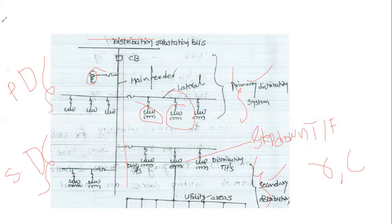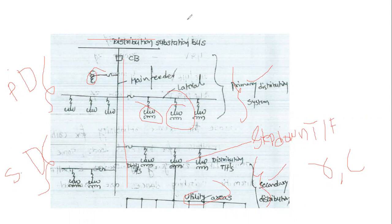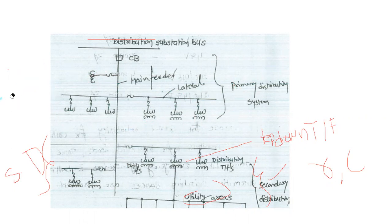Basically the distribution systems are classified into two types: primary distribution and secondary distribution. The utility area is connected by the secondary distribution system only. In the secondary distribution systems, we use mainly step-down transformers. For residential purposes we connect single-phase supply, and for industrial purposes we connect three-phase supply.